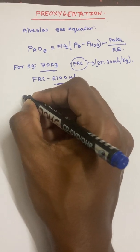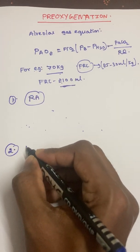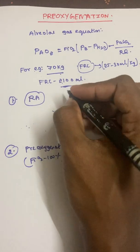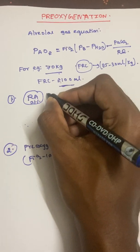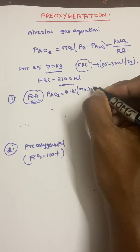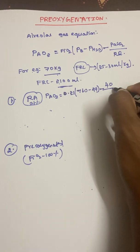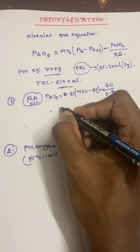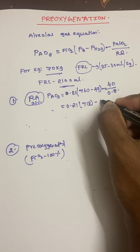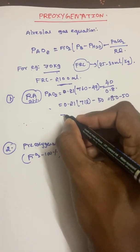First situation: the patient is breathing room air. Room air has 21% oxygen, so FiO2 = 0.21. Substituting into the alveolar gas equation: PAO2 = 0.21 × (760 − 47) − 40/0.8 = 0.21 × 713 − 50 ≈ 150 − 50 = 100 mmHg. So PAO2 on room air is approximately 100 mmHg.